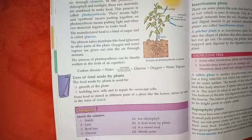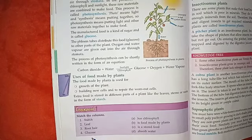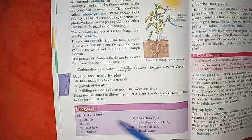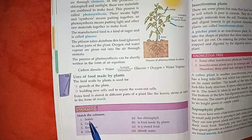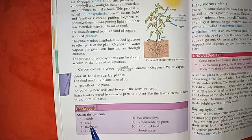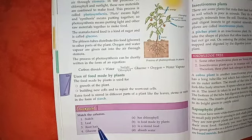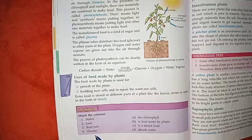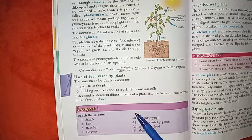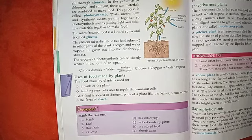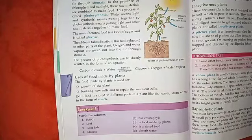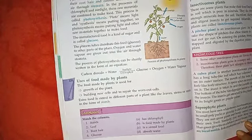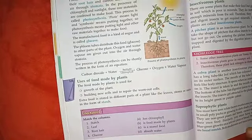Let's review the key vocabulary: starch, leaf, root hair, glucose, chlorophyll. The food prepared by plants is glucose. In your notebook, answer the following two questions about photosynthesis.